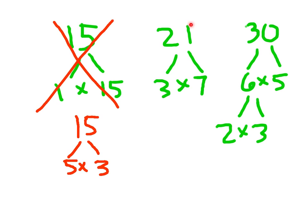Now let's look at another one. Is this a proper factor tree for 21? Hopefully you said yes. Now, is this a proper factor tree for 30? It looks right so far, but we forgot to bring down the 5. That 5 comes straight down. Each level of our factor tree must evaluate to the number we are drawing the tree for. So 2 times 3 is 6, times 5 is 30. It's a proper factor tree.